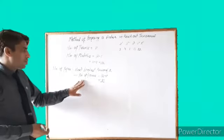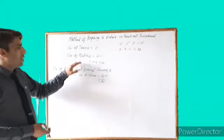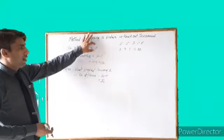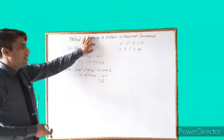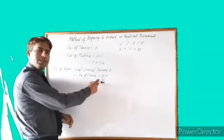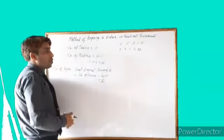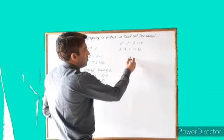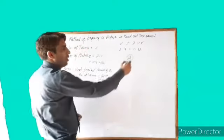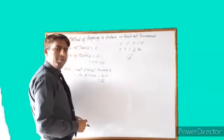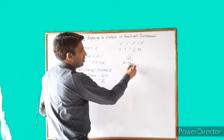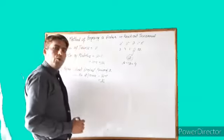We calculate the number of byes by subtracting the number of teams from the next highest power of 2. There are 11 teams, and the next highest power of 2 is 16, so the number of byes is 5. Suppose we have 12 teams — the next highest power of 2 is also 16, so 16 minus 12 gives 4 byes.